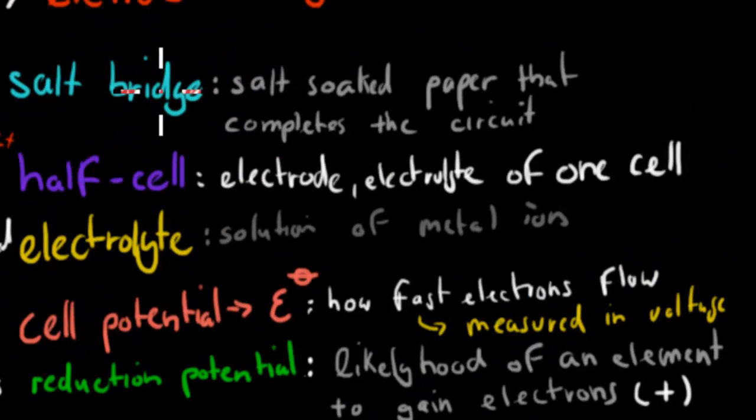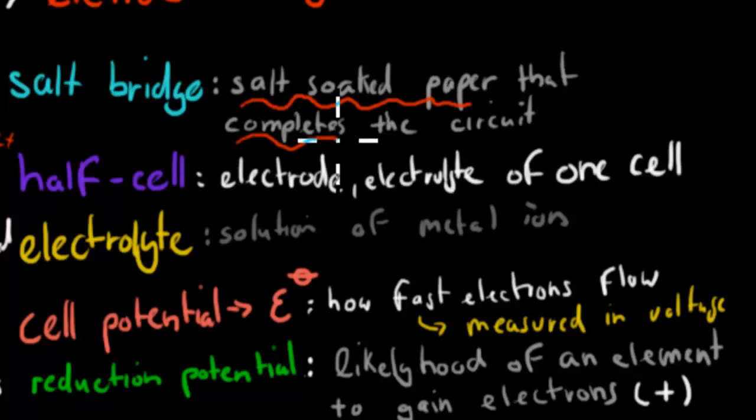We have our salt bridge. And that salt bridge was the thing that was the salt-soaked paper. And without the salt bridge, there would be no completion of the circuit. So electricity wouldn't be able to flow without the salt bridge.